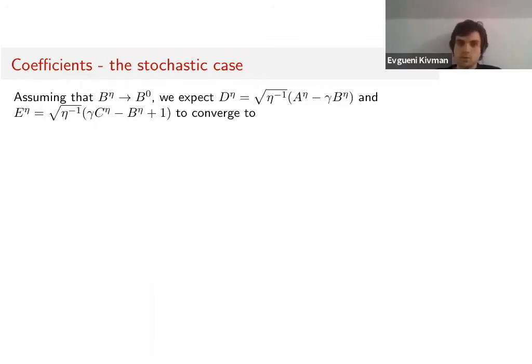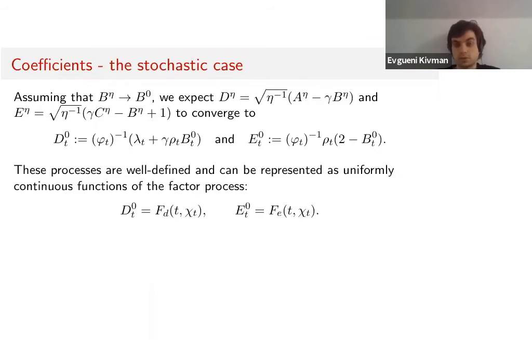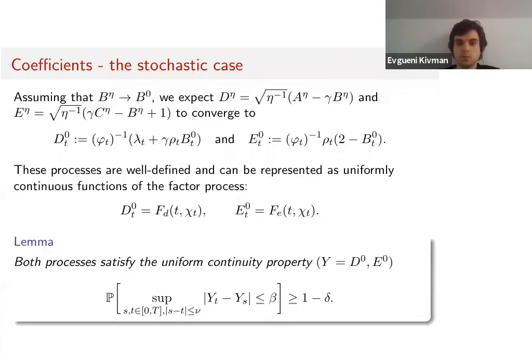We have introduced this B⁰ as a limit candidate for B^η. If we assume that this works, we can also expect that D^η and E^η, which are given in these forms, converge to functions of B⁰. They can be represented as uniform functions of the factor process, and both processes D⁰ and E⁰ satisfy this regularity condition as well.